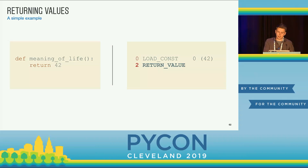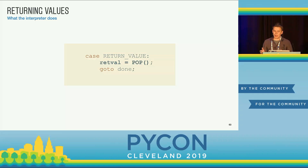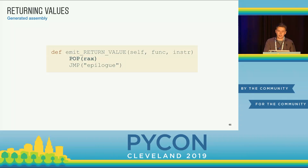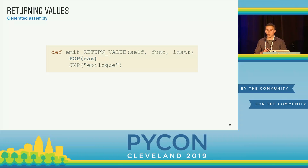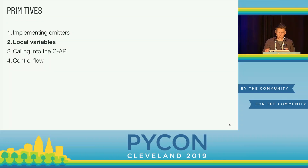Now let's look at RETURN_VALUE. Return value is again super simple — we just pop the stack and then we exit the interpreter loop. The emitter code looks correspondingly simple: we pop into a register, and here the register is actually important. The RAX register is where return values go, and then we jump into our epilogue, which cleans up the stack and returns.